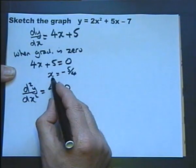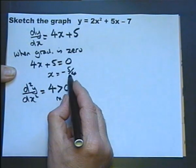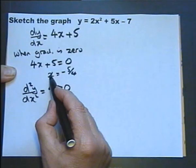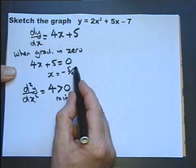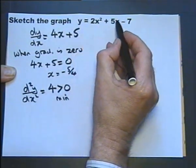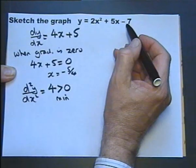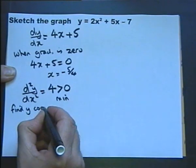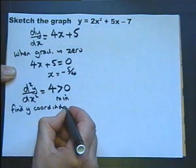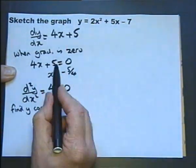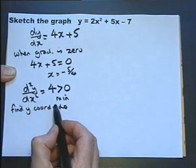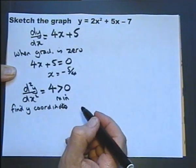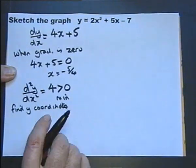What we haven't yet got is the y coordinate. So we need to substitute this minus 1 and a quarter into the equation of the curve to work out the y coordinate. Now as I've said before, do get in the habit of writing words along the way. So the examiner can see the way you're working. So we're going to find the y coordinate.